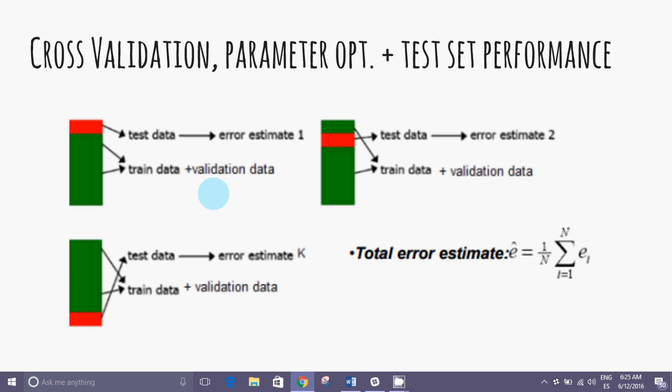Cross validation, parameter optimization and test set performance. For large sample sizes, the division in the training validation test set portions is sufficient, using the percentage of the total number of data we defined in the first slide, but with small sample sizes, a good alternative is cross validation.